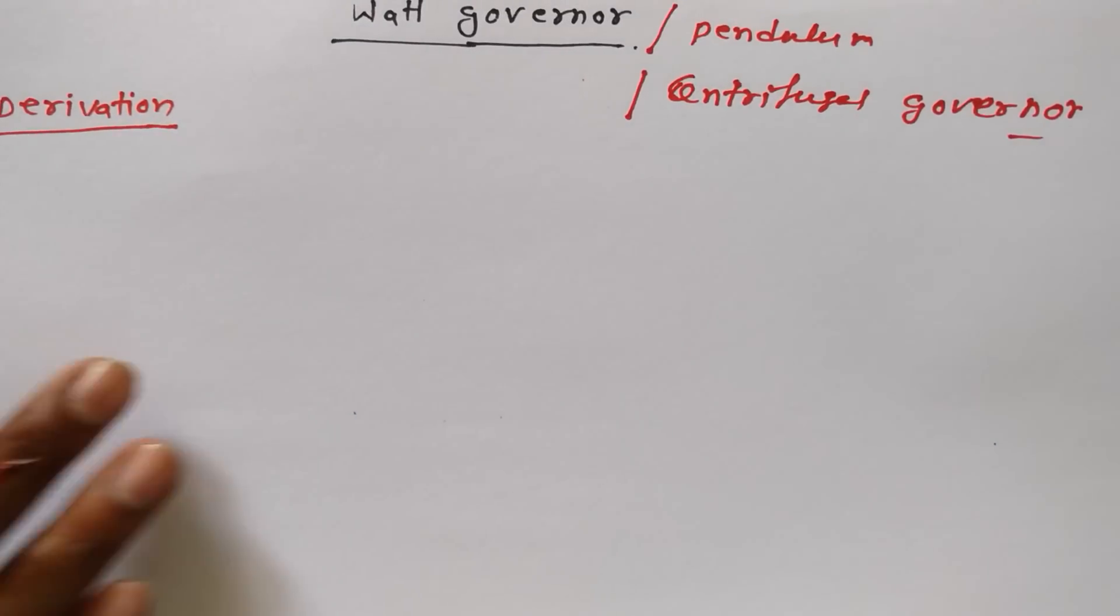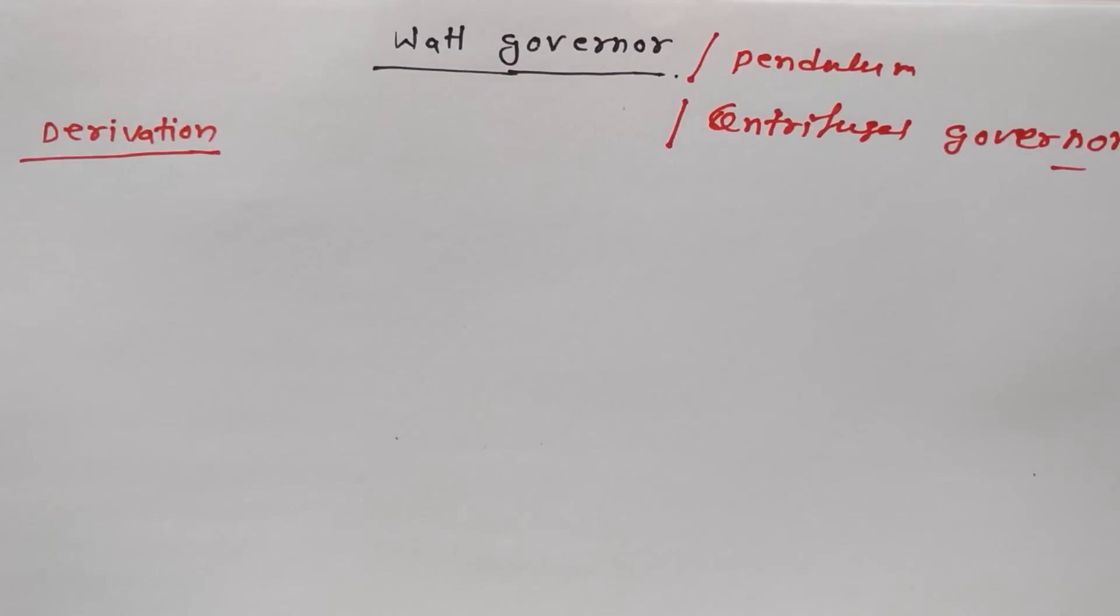To derive the equation for Watt Governor, you need to know first the diagram. The diagram plays the most important role. If you are preparing for university examination, try to remember the diagram because there are few governors that are most important and those derivations are asked frequently in university examinations.